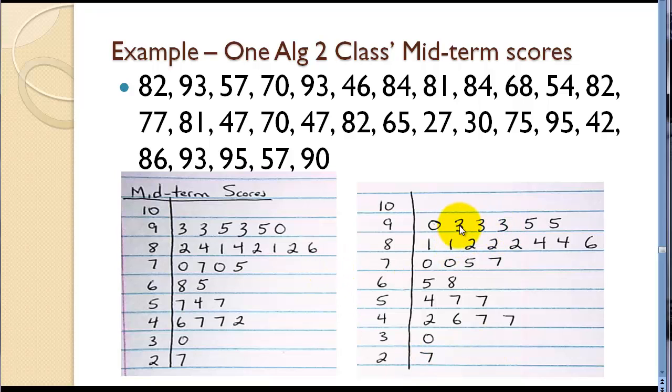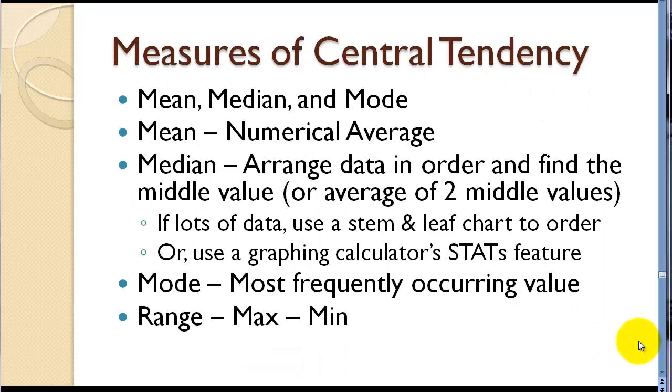Mode is the most frequently occurring value. When we look here we had, let's see, we had three 93s and three 82s. So those would be the mode. When you have more than one mode, in this case two modes, that could be called bimodal. Some data may have no numbers repeated, so they may have no mode. And range is the distance between the minimum value in the list and the max.